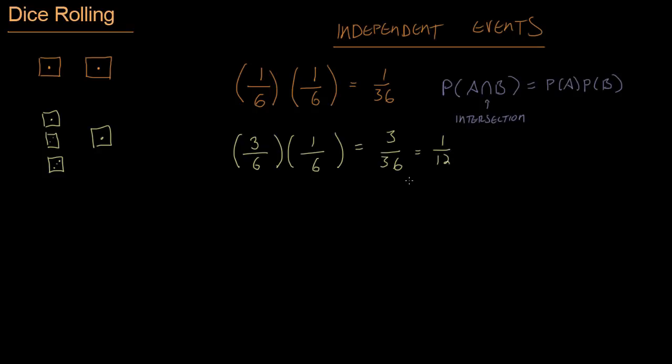So that is going to be equal to one out of twelve after we simplify. And so the probability of the first die being one, two, or three, and the second die being a one is one out of twelve. Easy.